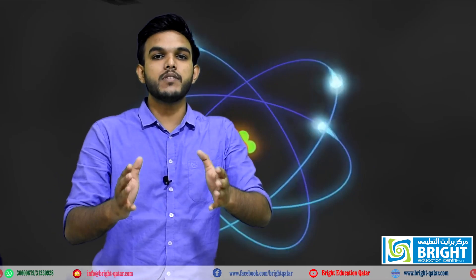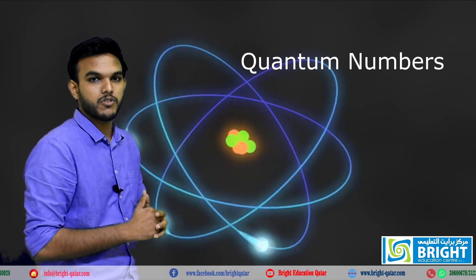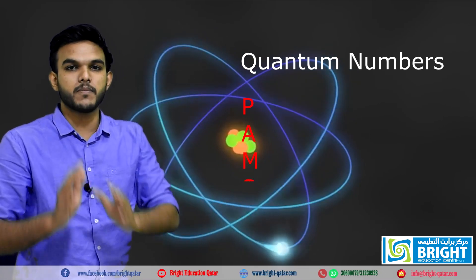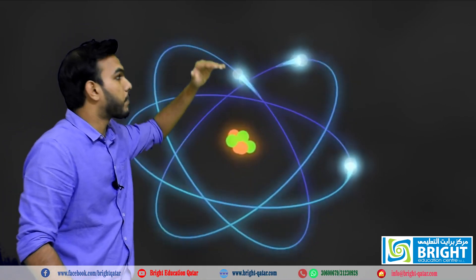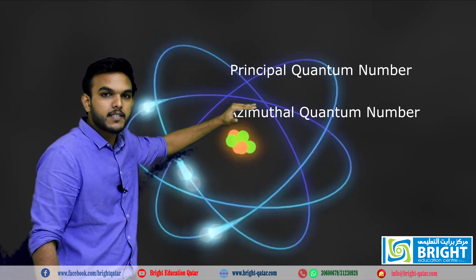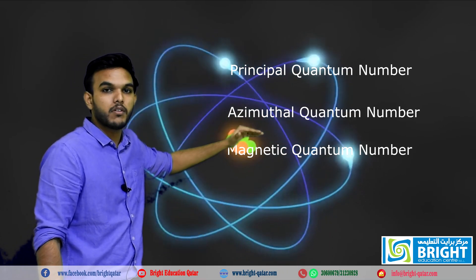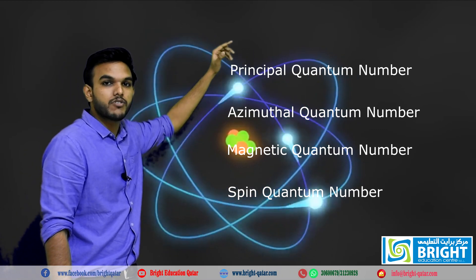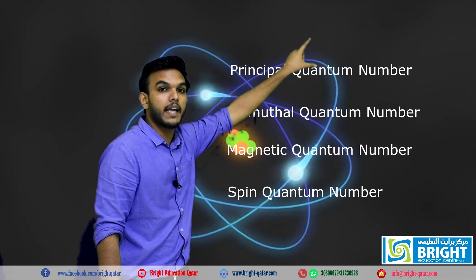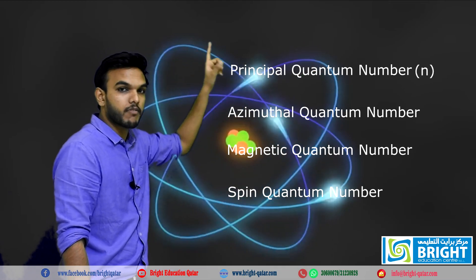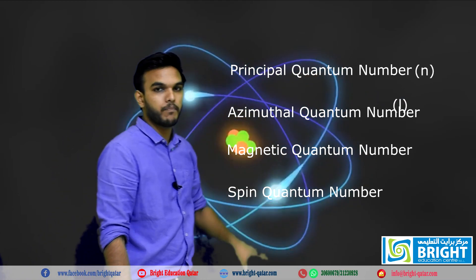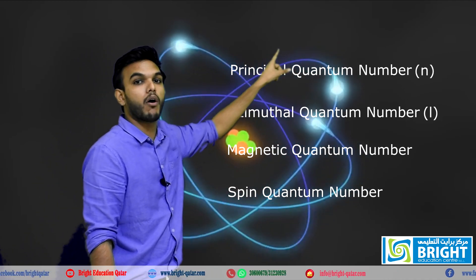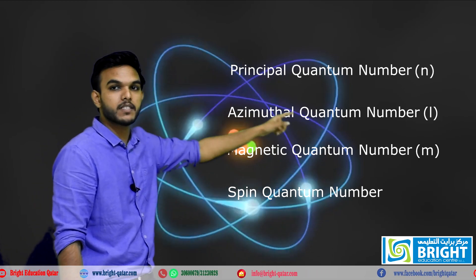Based on this, I am going to discuss quantum numbers. We can classify quantum numbers into four types: the principal quantum number, azimuthal quantum number, magnetic quantum number, and spin quantum number. The principal quantum number is represented by the letter n, the azimuthal quantum number by l, the magnetic quantum number by m, and the spin quantum number by s.